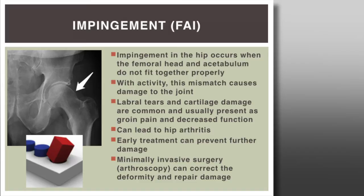A quick overview of impingement: this is a mismatch between the femoral head and socket. When the hip comes into flexion and internal rotation, they're not fitting symmetrically, causing impingement. This damages cartilage at the chondrolabral junction and the labrum, usually presenting as deep groin pain — not buttock or lateral hip pain. It's increasingly recognized as a precursor to arthritis, and minimally invasive arthroscopic surgery is now used rather than big open surgical hip dislocations.